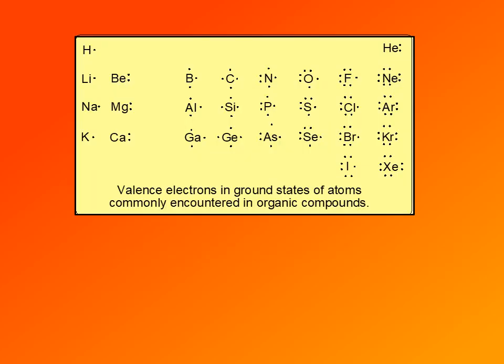First, electron dot formulas represent, as the name indicates, electrons as dots. So each dot represents one valence electron. Here is a periodic table that shows only main group elements, because those are the ones that are usually represented by Lewis structures. Valence electrons on each atom are represented as dots — note that some of these electrons are paired, some are not.